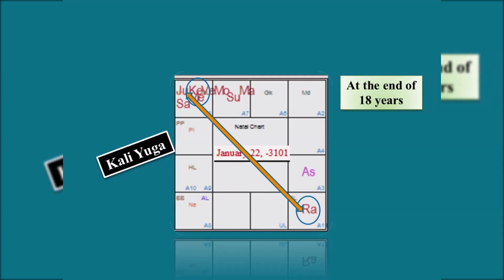At the time of Kali Yuga, they were in Pisces and Virgo. After 18 years, they come back here. And after 36 years, they come back here.